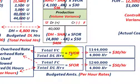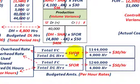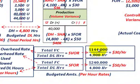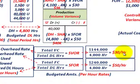To get the standard variable overhead rate, take your total budgeted variable costs and divide by the total budgeted direct labor hours. Total budgeted variable costs are $144,000, and the budgeted direct labor hours are 4,800 hours. Dividing gives a $30 per hour standard variable overhead rate. So for each direct labor hour, $30 is charged for standard variable overhead.